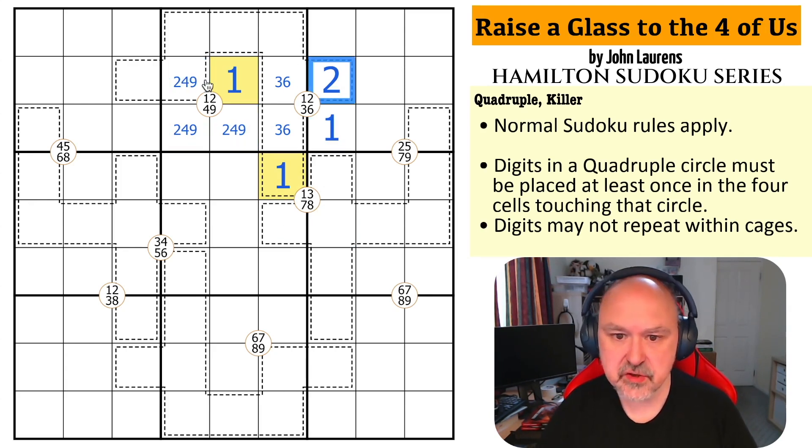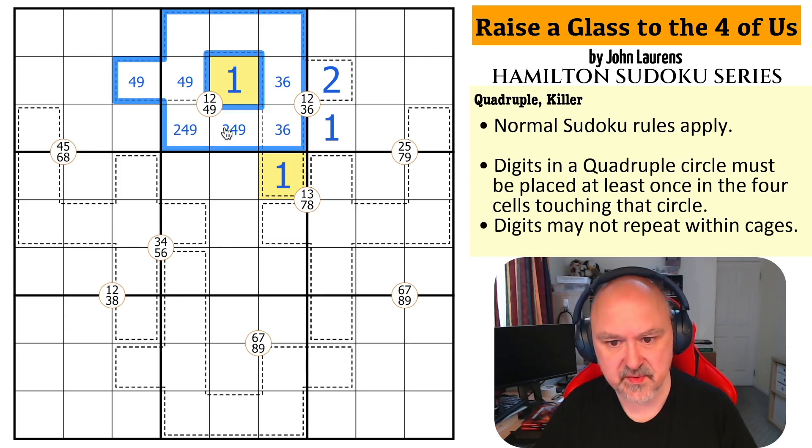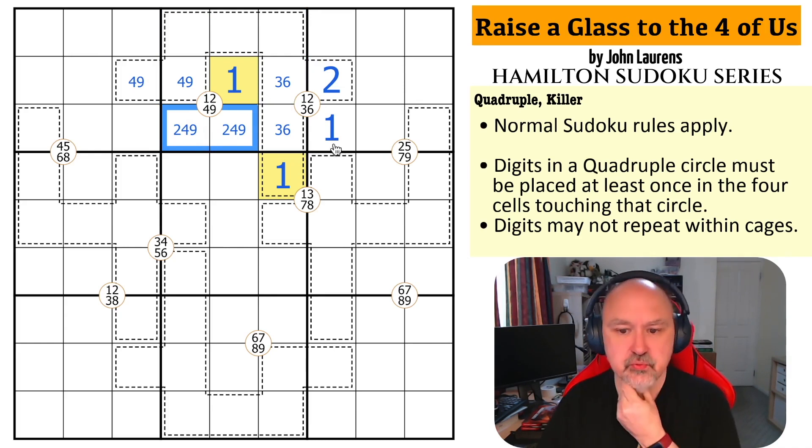This 2 means this is not 2. And, these two cells... there must be a 2 in here. And, there must be a 4, 9 here. Because, whatever this cell is can't repeat in the cage. So, it has to be one of these two. So, this is a 2. And, the other 4, 9 has to go down here. That's really cool. That's very cool. Well, that's smooth and clever.